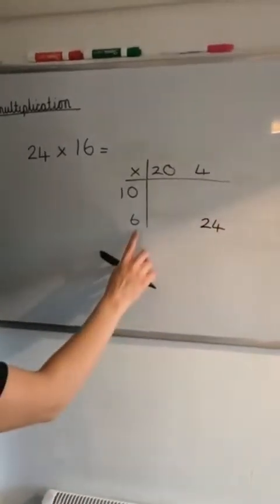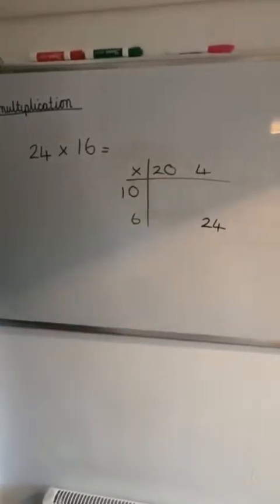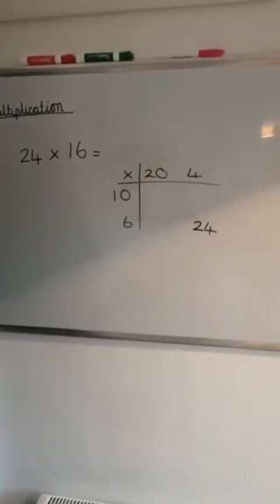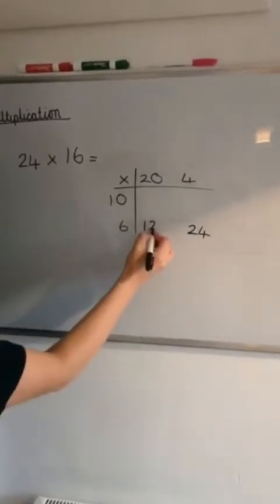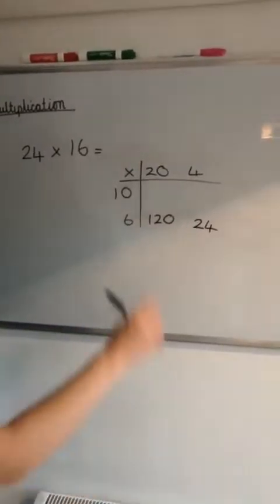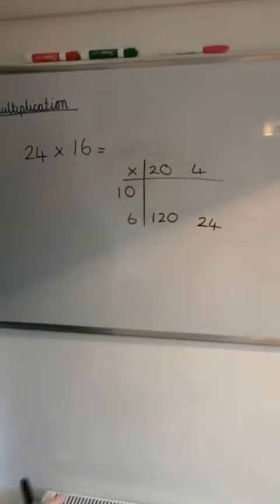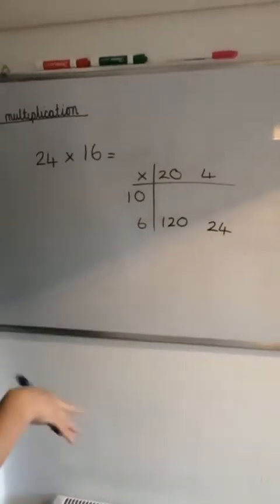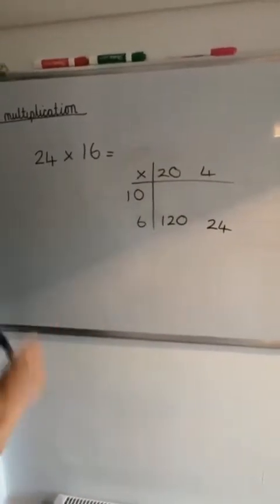Now we've got 6 times 20. Well, I know that 6 times 2 is 12, so 6 times 20 is 120. Now we've got 4 times 10. So again we can either count in 4s or count in 10s: 10, 20, 30, 40.